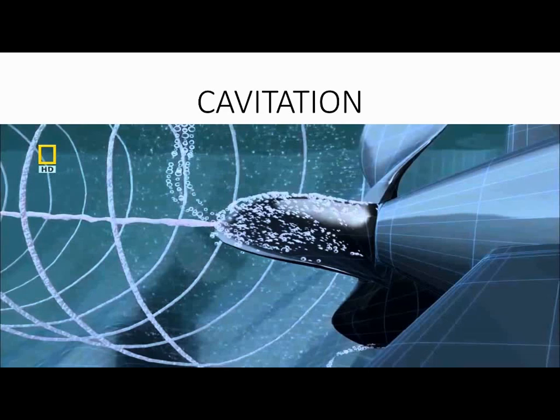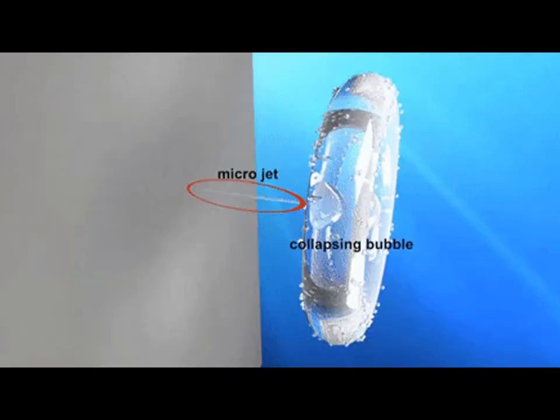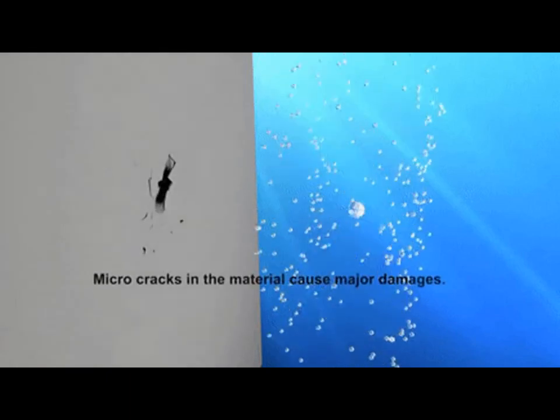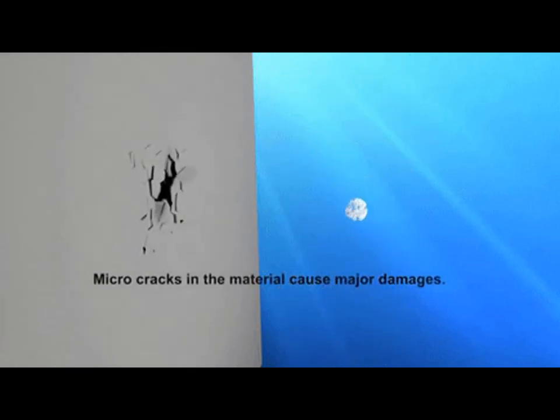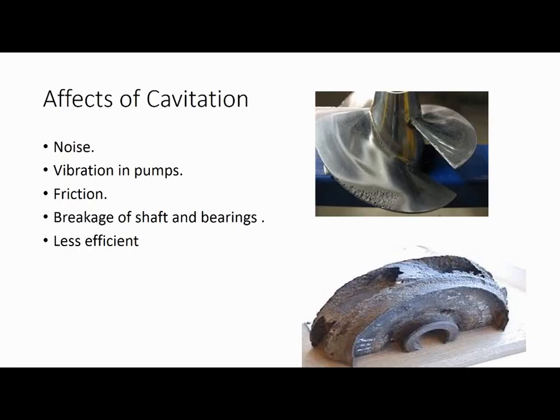Cavitation. Today we will learn about cavitation in pumps. Cavitation is the formation and subsequent collapse or implosion of vapor bubbles in the pump. It occurs because the absolute pressure on a liquid falls below the liquid's vapor pressure.